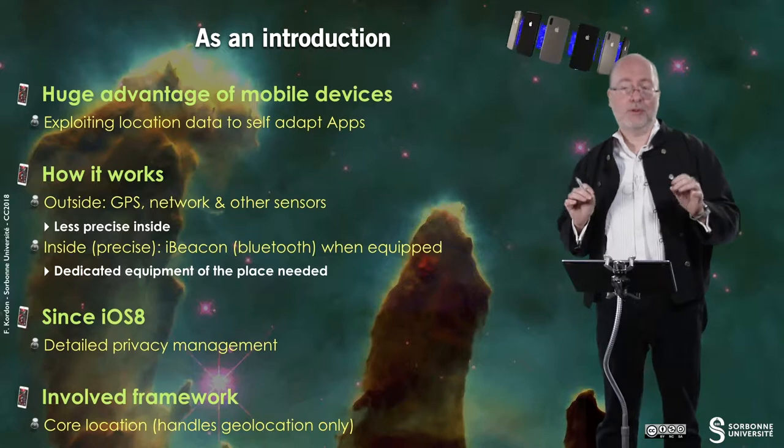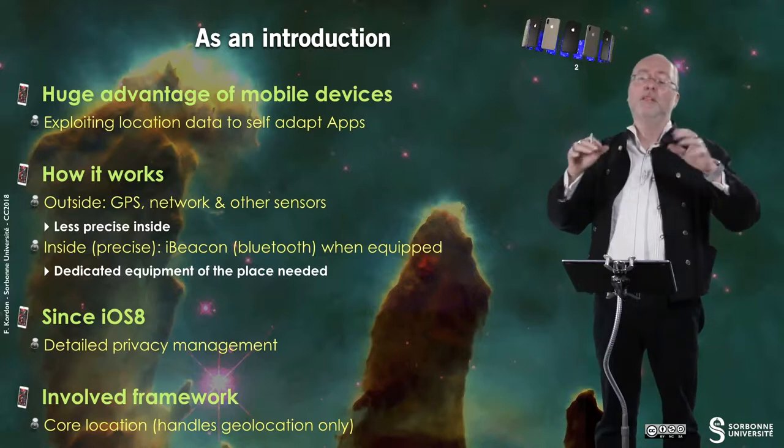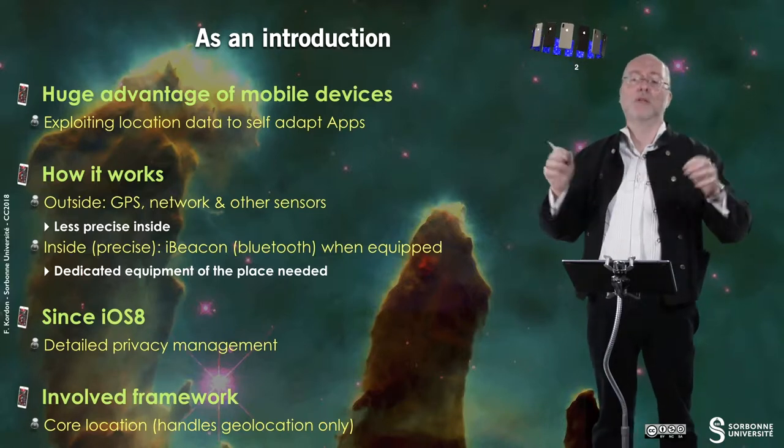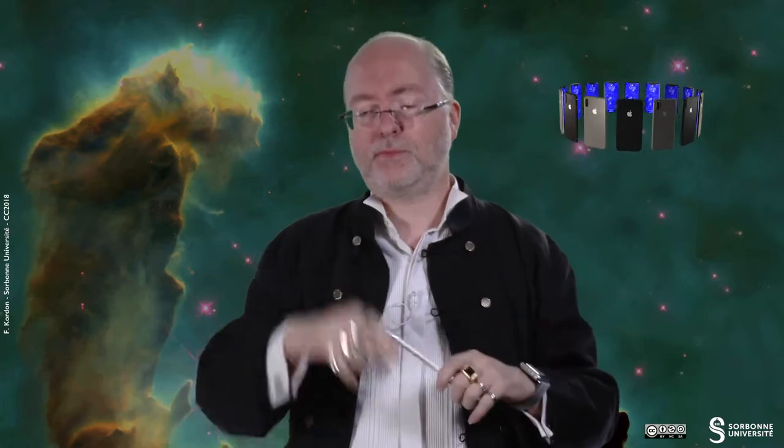eBeacon is a sort of Bluetooth standard where you can have, typically in big industrial shows, corridors and places where companies are. You have sensors that can communicate together and give you a very precise triangulation of your position throughout the venue where the show takes place.